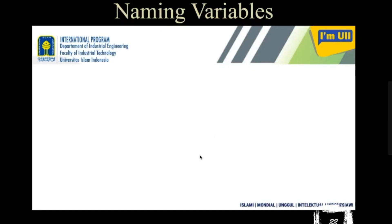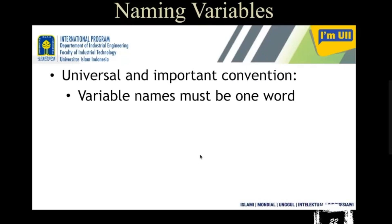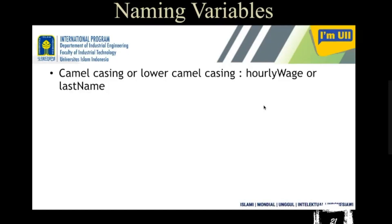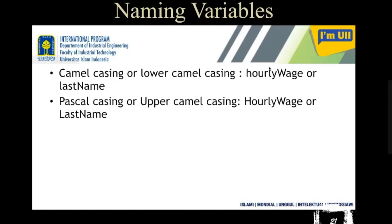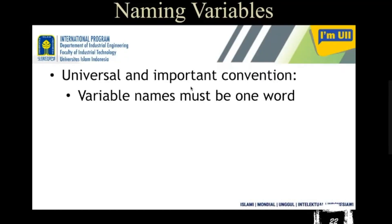These are the ways you can follow to name a variable. There are also universal rules. First, a variable name must be one word. It may look like two words, but it is actually a single word consisting of two English words. If you give a space between the two words, it becomes two words, and that is not possible for identifying a single variable — it would be treated as two variable names.